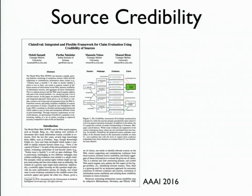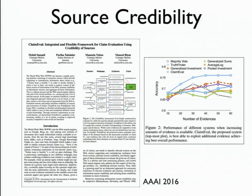We've also done work on estimating the credibility of sources, because all sources are not equally valuable. Especially for non-black-and-white facts — like whether chicken is healthy — you could argue both ways. How do we automatically induce the credibility of different sources and use those to derive better knowledge and better inference? That's a really important problem and we have some work along that dimension.